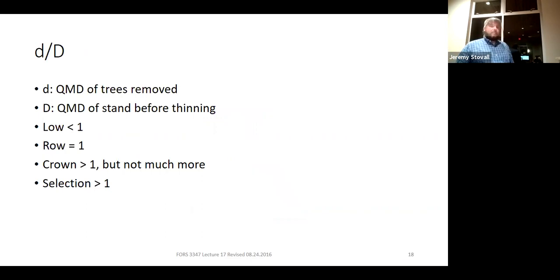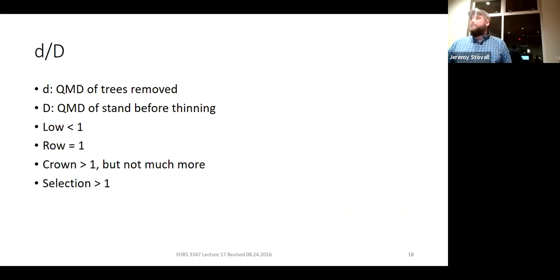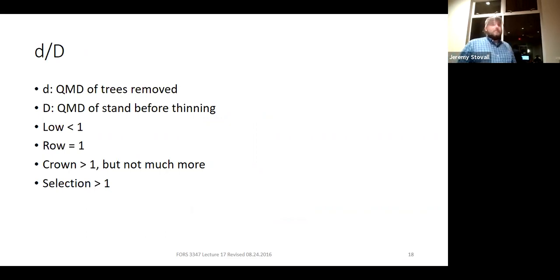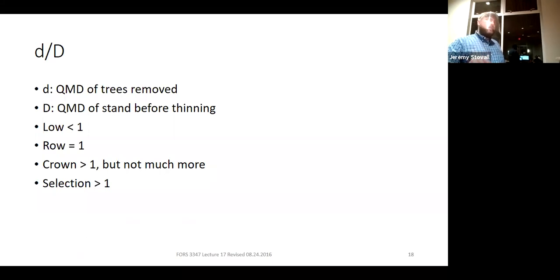Here's the summary: In a low thin, the D-over-D ratio is less than one. In a geometric thin like a row thin, it's equal to one. In a crown thin, it's greater than one — perhaps 1.05. In a selection thin, it's significantly greater than one — perhaps 1.25. That's how thinning ties into the different diameters in our stand.